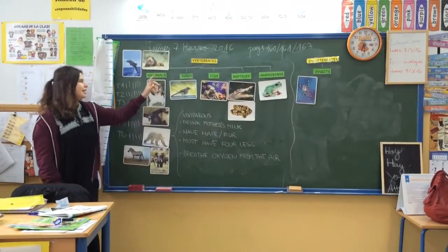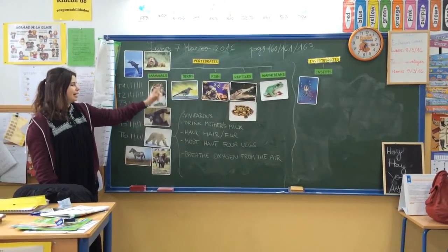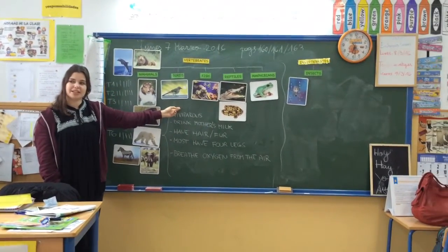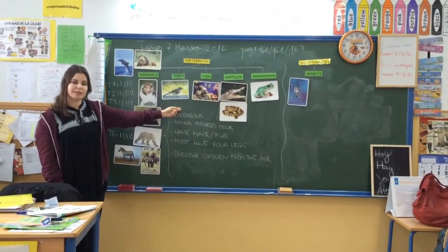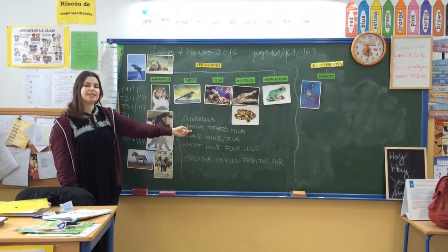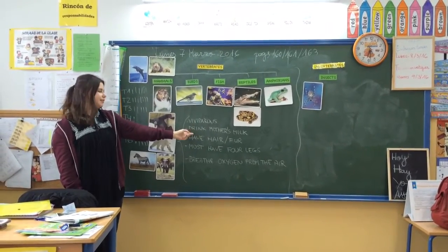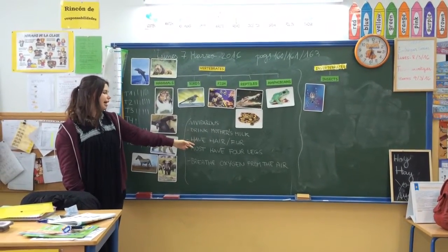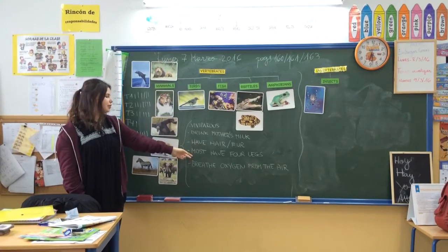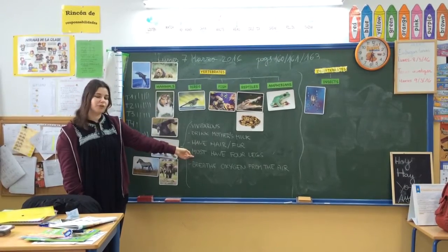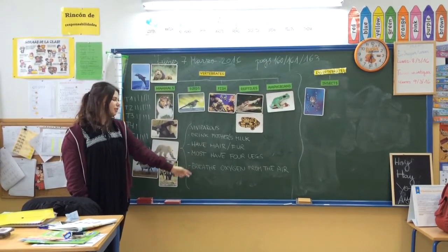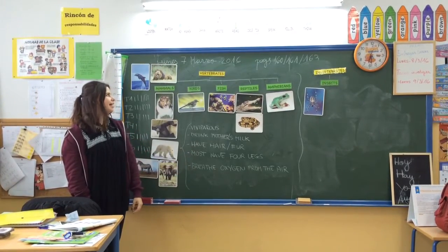If an animal is a mammal, it is viviparous, which means it's born from its mother's belly. It drinks its mother's milk, it has hair or fur, most of them have four legs and they breathe oxygen from the air.